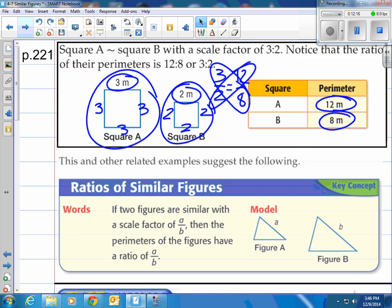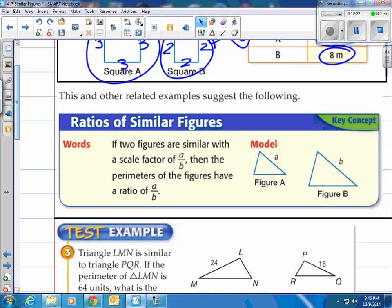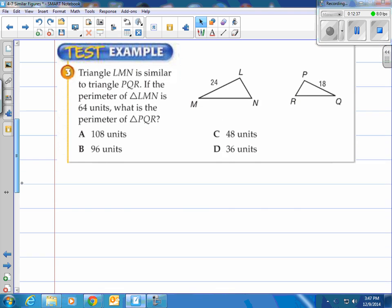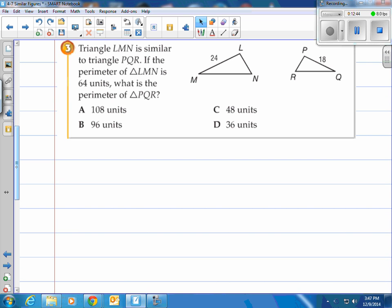Where can we use this? Here it is. Key concept. Ratios of similar figures. If two figures are similar with a scale factor of A over B, whatever those numbers may be, then the perimeters of the figures have a ratio of that same value, A over B. That's what we just proved up there. Take a look at this example. Triangle LMN is similar to triangle PQR.